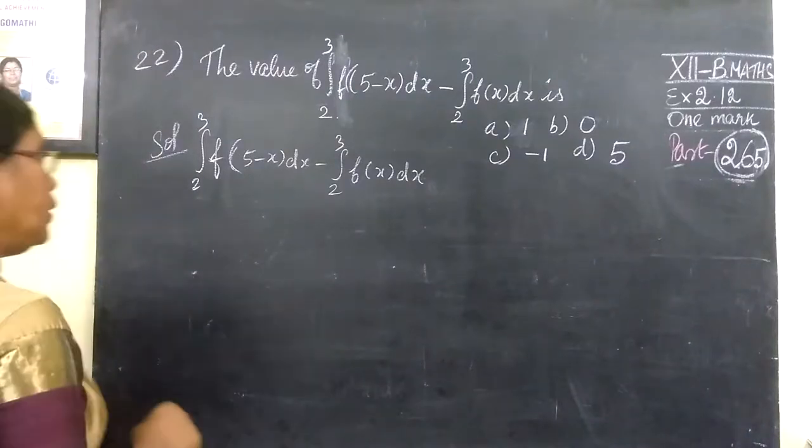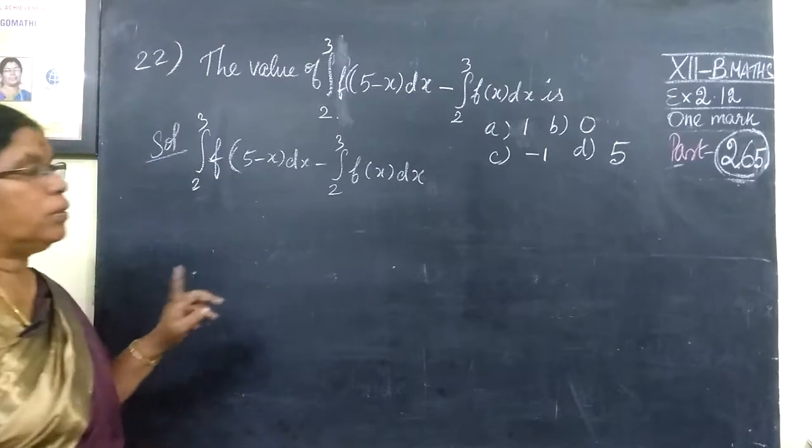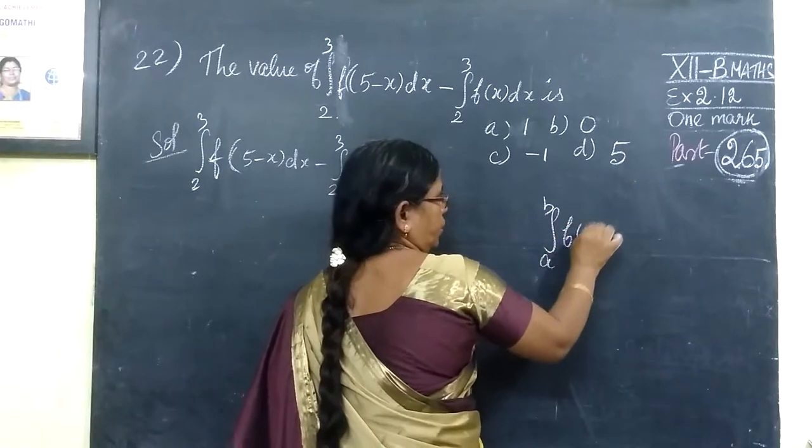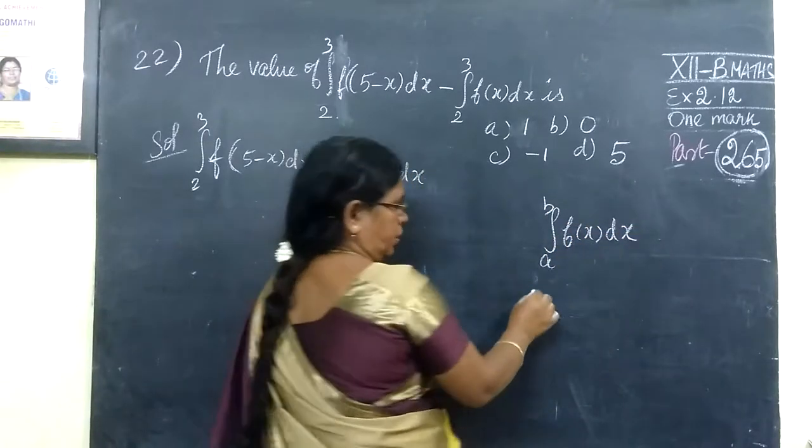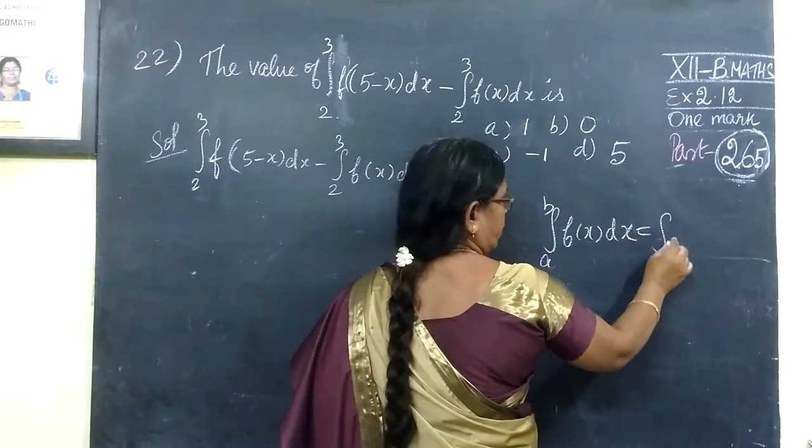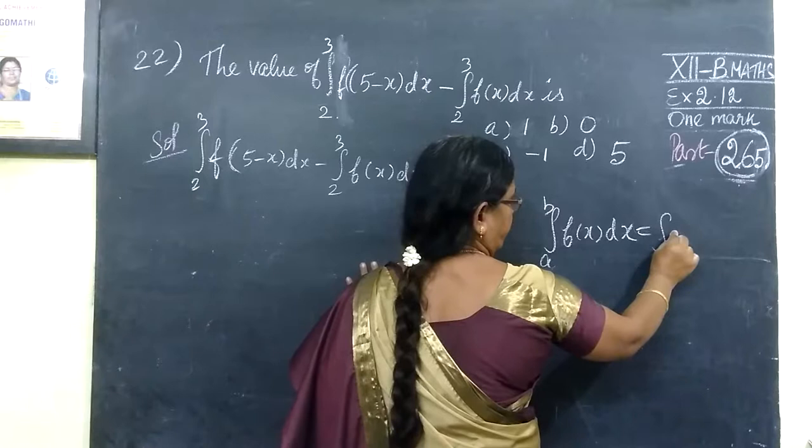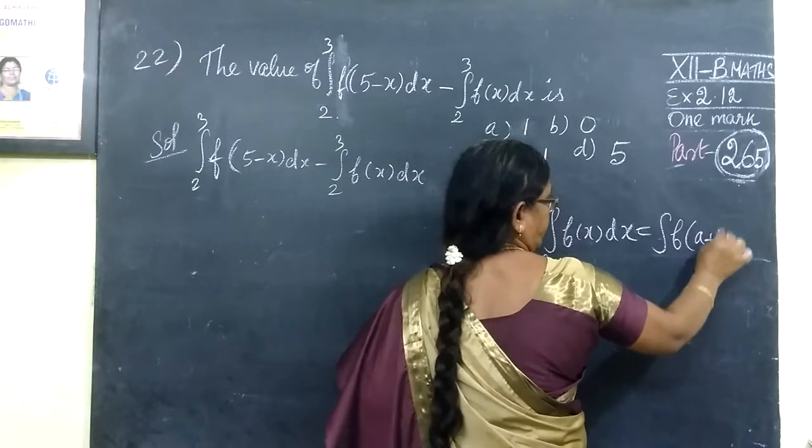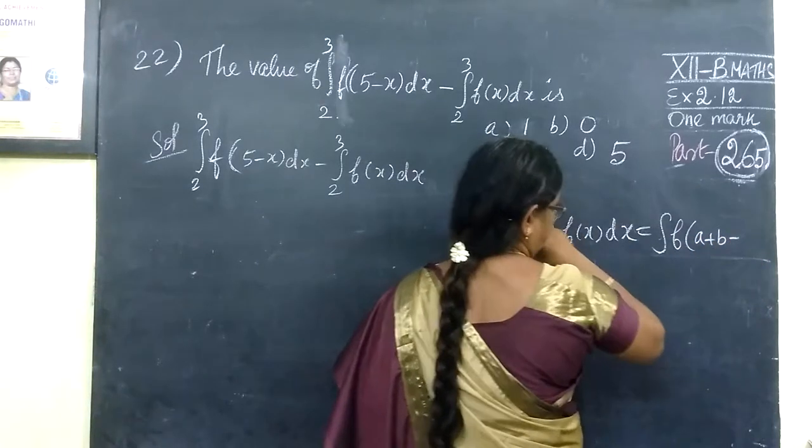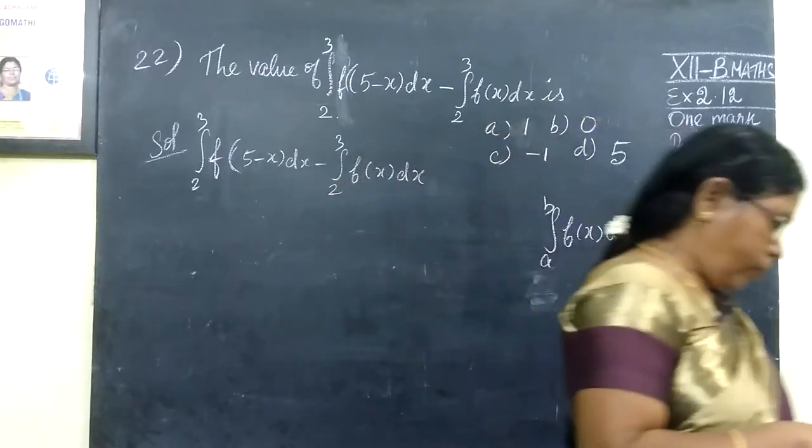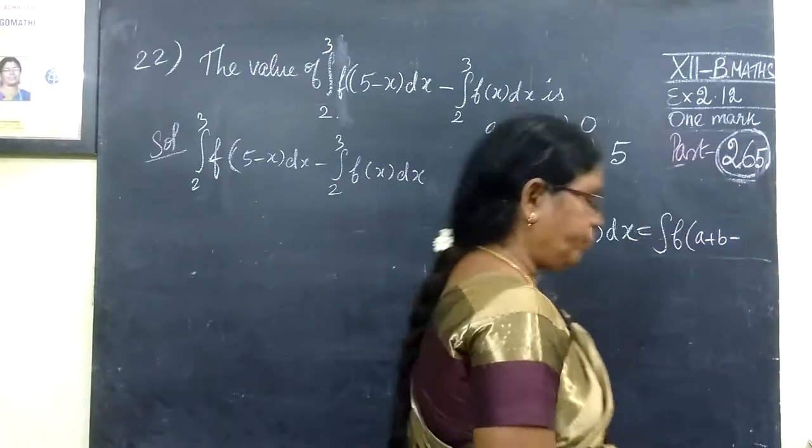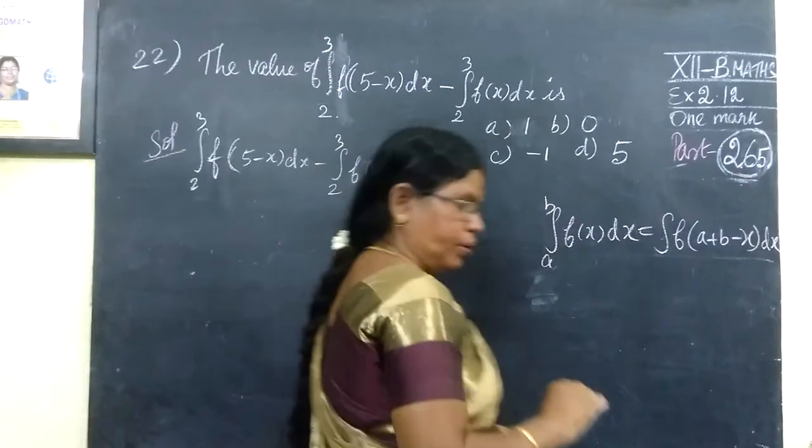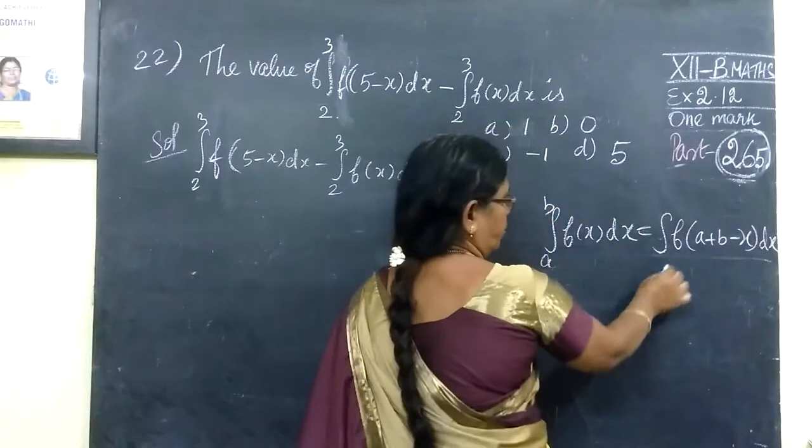Now, question number 22. The value of this. Look, this is a significant property. The integral a to b of f of s ds equals integral a to b of f of a plus b minus s ds. It is correct: a plus b minus s.